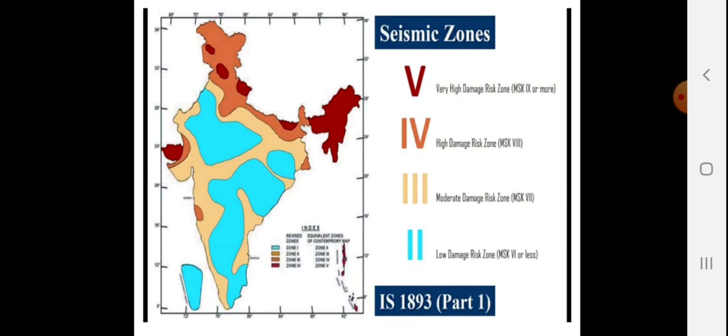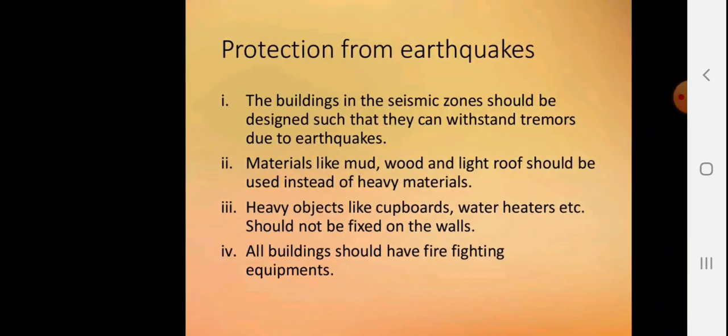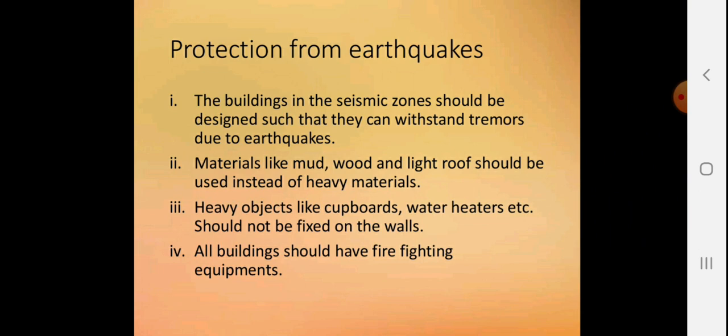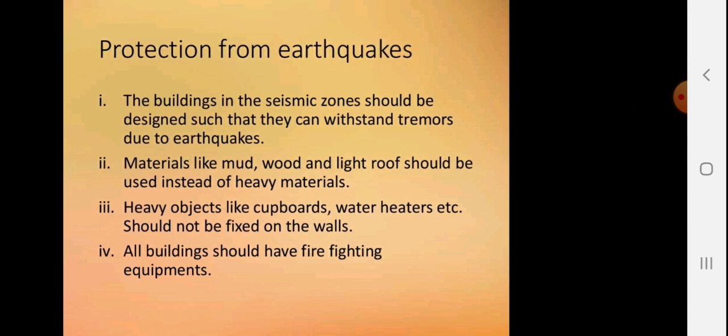These are the seismic zones shown in the figure. Protection from earthquakes: Buildings in seismic zones should be designed such that they can withstand tremors due to earthquakes. Materials like mud, wood, and light roofs should be used instead of heavy materials. Heavy objects like cupboards and water heaters should not be fixed on walls. All buildings should have firefighting equipment.